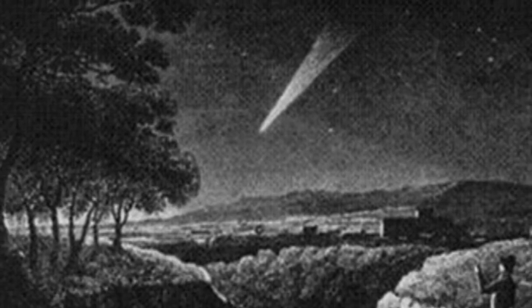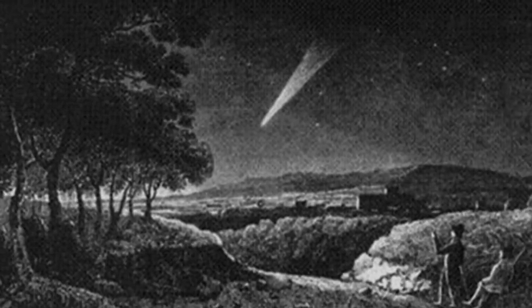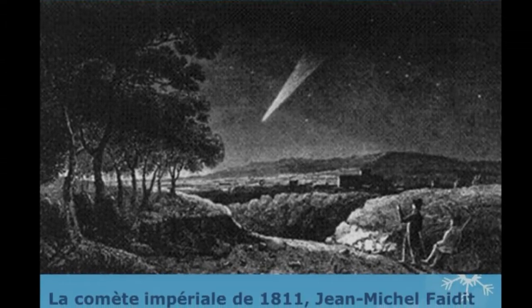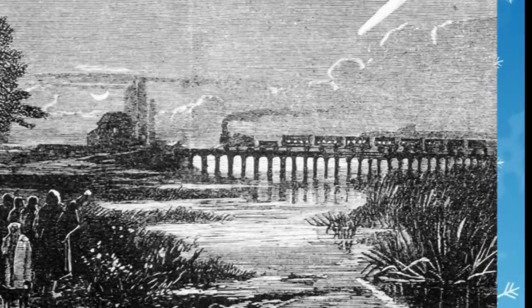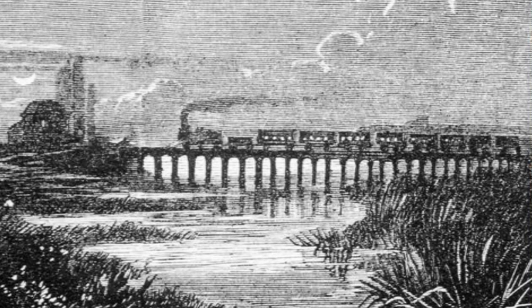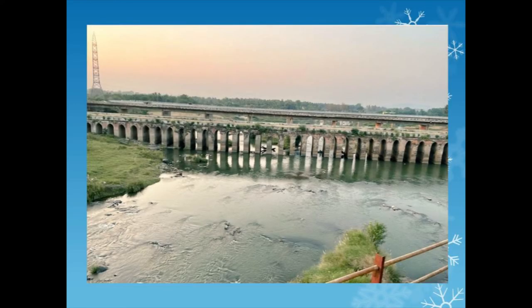Comets have always attracted artists. This painting shows the comet of 1811, which was visible even during the day. This artwork was sketched in India by Burrell Smith. Professor Ramesh Kapoor traced the location with the help of the railway bridge, and used the moon and constellations in the background very effectively to get the exact date. This is the Kabini Bridge on the Mysuru–Nanjanagudu Road.